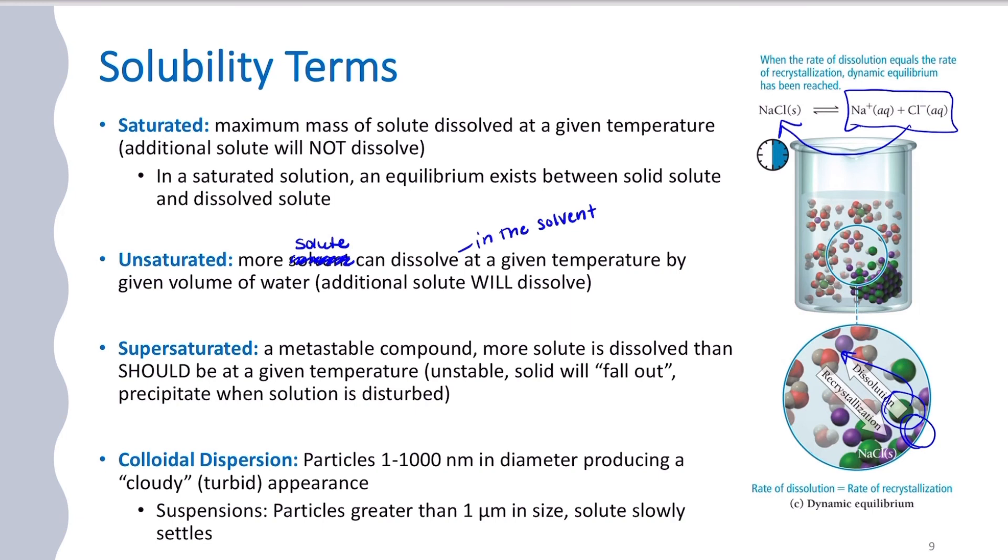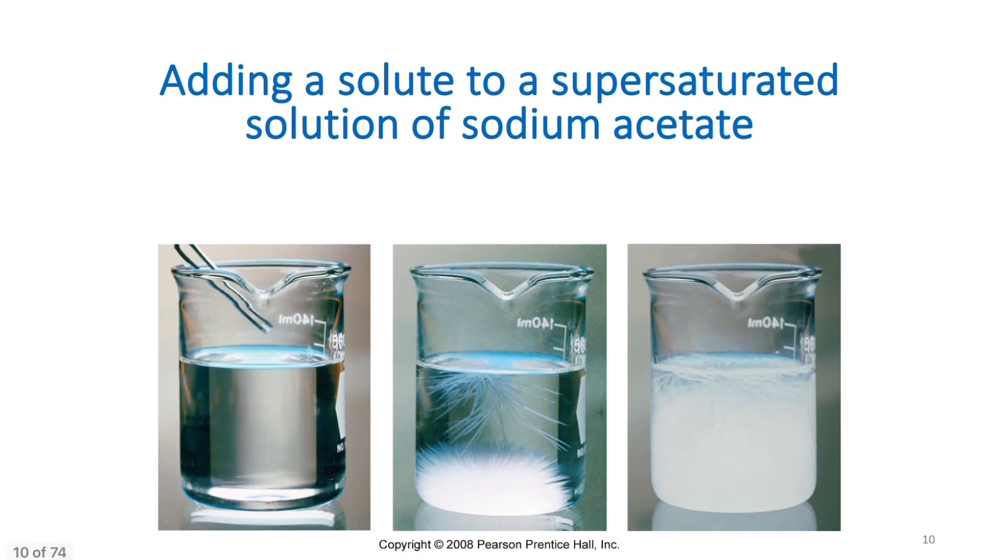And a colloidal dispersion is also another system you can have. That's when you have particles that range from 1 to 1,000 nanometers in diameter, and they produce a cloudy or turbid appearance. Turbid is another word for cloudy. You see this a lot in the organic lab where you've got a solution, and you're like, okay, but that's not clear to look through anymore. And by clear, I don't mean like water color. I mean it can be a colored solution, but you can see right through it. It's completely transparent. Turbid or cloudy means like an opaque appearance to the solution. This happens when you've got a colloidal dispersion. There are suspensions in here. You can also have a suspension instead of a colloidal dispersion where the particles are greater than 1 micrometer in size, and the solute slowly settles out. Oftentimes when we have solutions like this, we will, instead of just filtering, we'll use like a centrifuge or something else to pull those particles down a little bit faster.